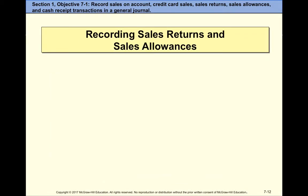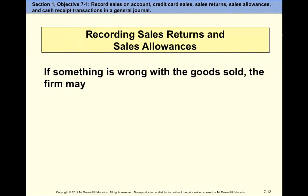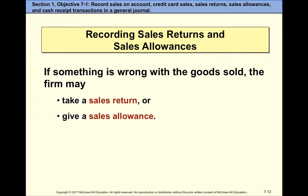Now, what if the customer makes a return? I introduced a new account called sales returns and allowances. A sales return is when the customer physically ships the goods back to us — we physically receive the merchandise back. A sales allowance is when the customer notifies us something went wrong and we tell them to keep the product but give them an allowance, kind of like a discount — we do not physically receive merchandise back.